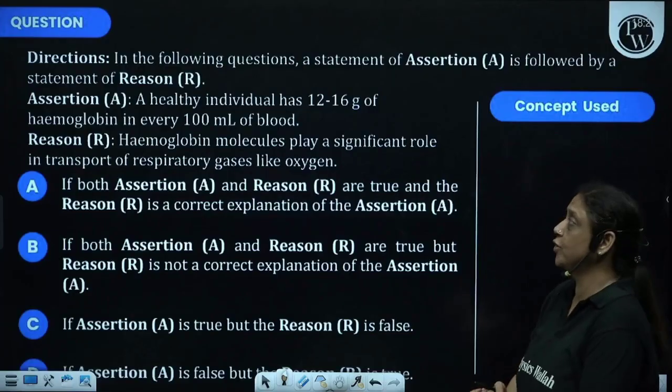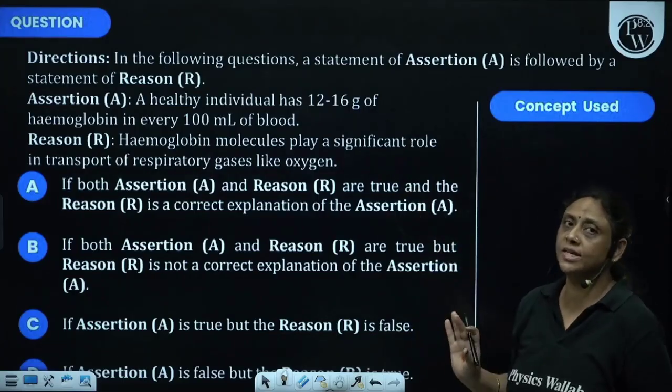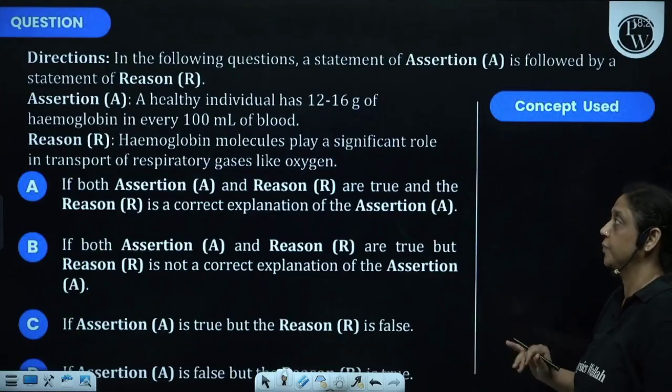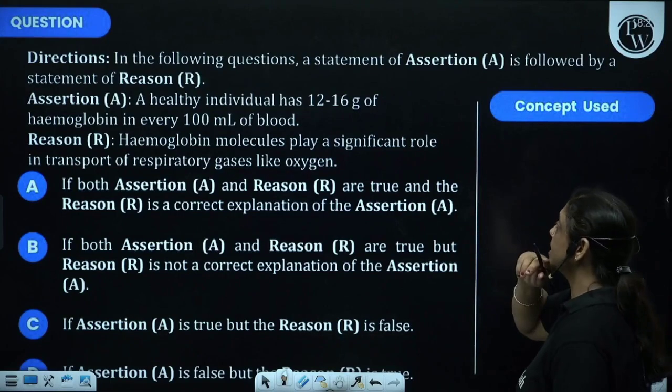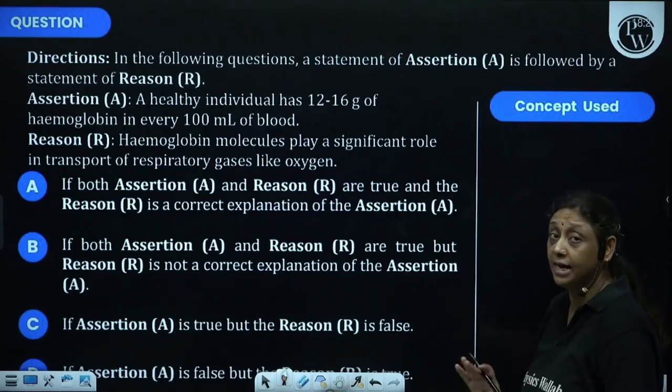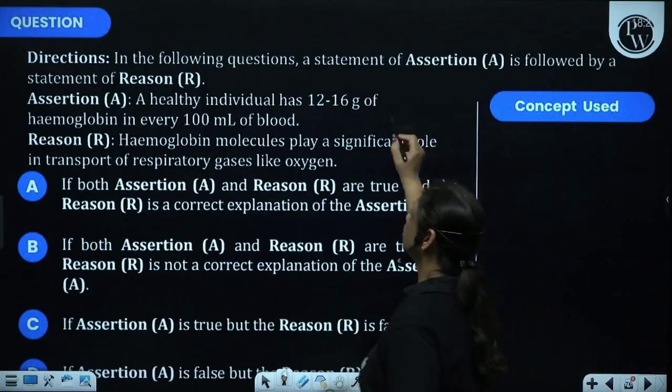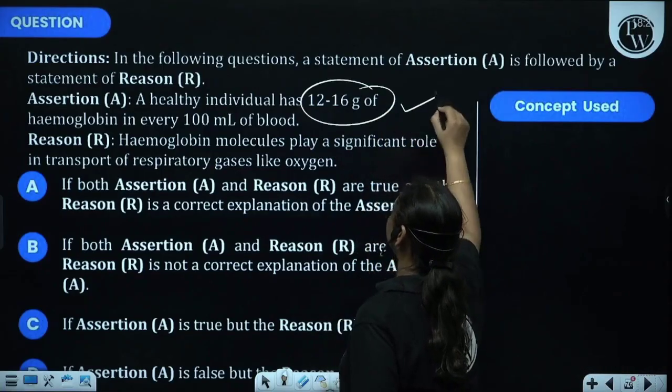Let's see this question students. It is an assertion-reason based question. A healthy individual has 12 to 16 grams of hemoglobin in every 100 ml of blood. It is well given in NCERT: 100 ml of blood, 12 to 16 grams of hemoglobin is the correct statement.